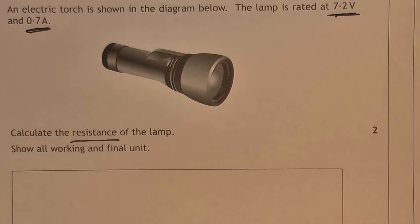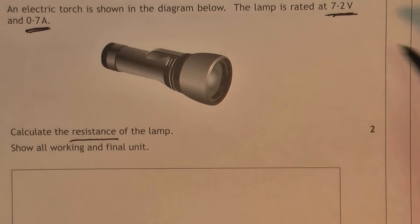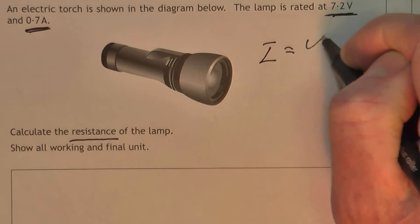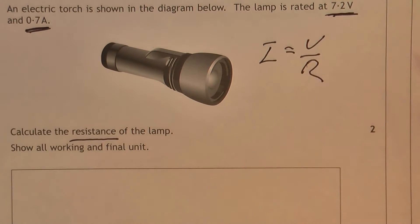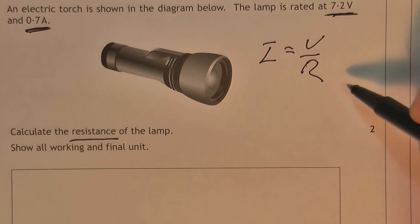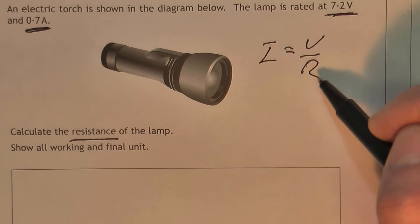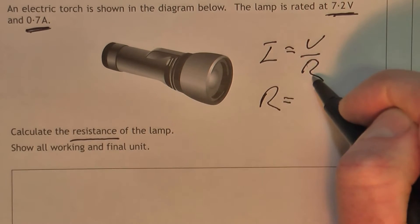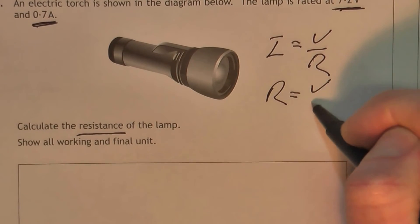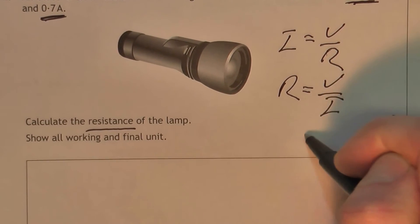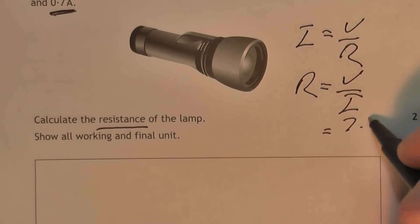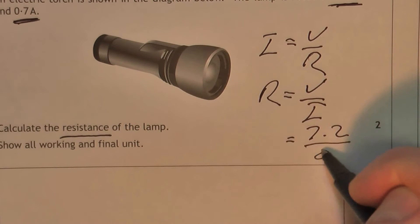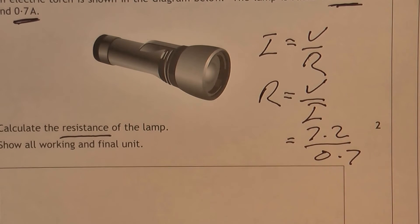If you go to your data booklet, you'll get the I equals V over R formula. The current is the voltage divided by the resistance. We actually need the resistance here. So the R jumps across up to the top. So R equals V divided by I. So the V is 7.2 and the I is 0.7. Not too hard at all.